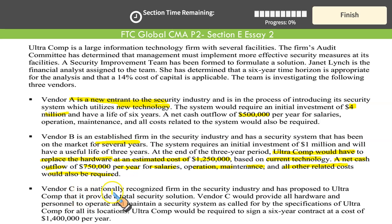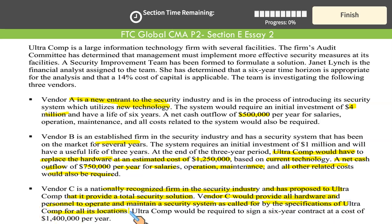Vendor C is a nationally recognized firm in the security industry — well known. It has proposed to Ultracomp that it provide a total security solution: everything. Vendor C would provide all the hardware and personnel to operate and maintain the security system as per Ultracomp's specifications for all its locations — a one-stop solution. Ultracomp would be required to sign a 6-year contract at a cost of $1.4 million per year. So, all these are cash outflows — only cash is leaving your hand in all three options, only outflow.